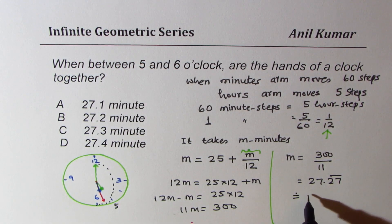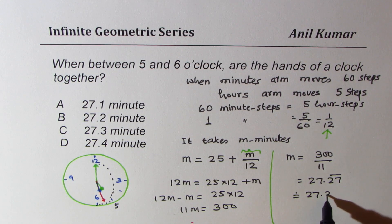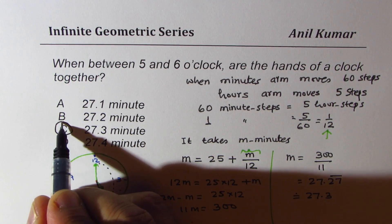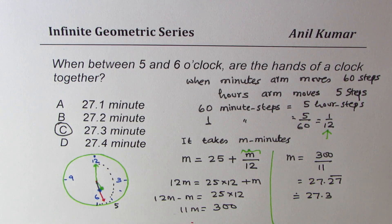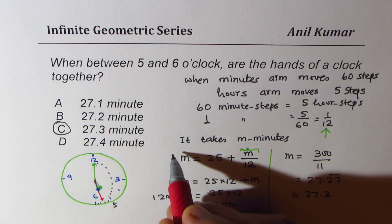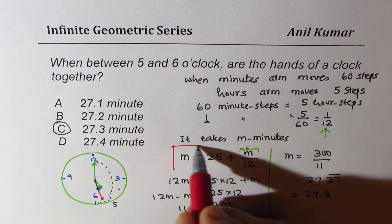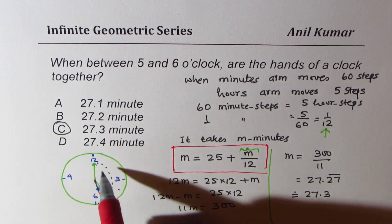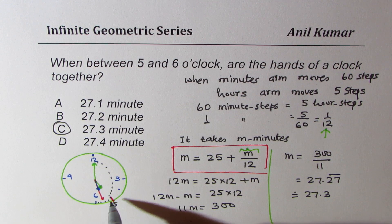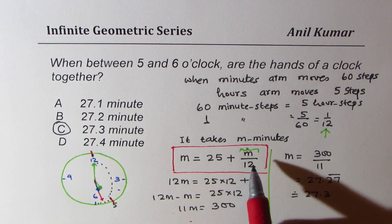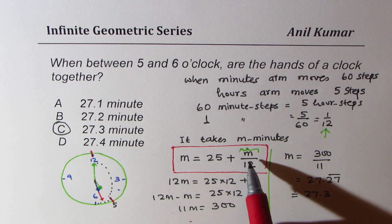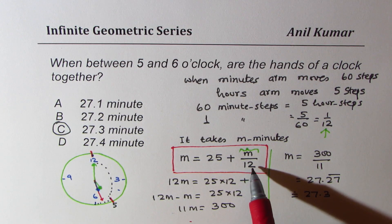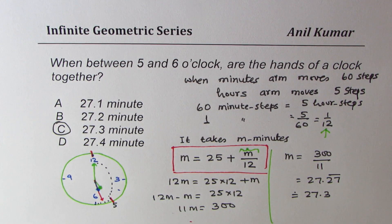So C is the right option. Do you understand? So now once you know this formula, which is the number of minutes will be equal to initial time difference, which is 25—from here to here—plus the hour hand will move m times 1 over 12, so that becomes an equation to solve for all such questions. So I hope this step is absolutely clear.